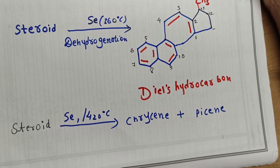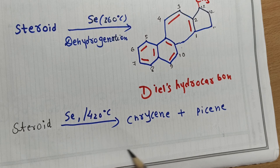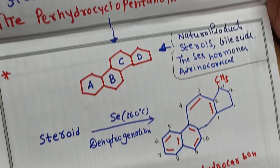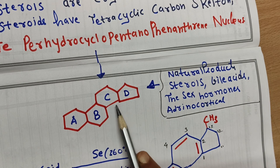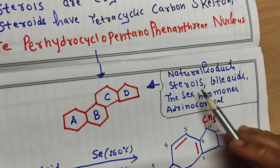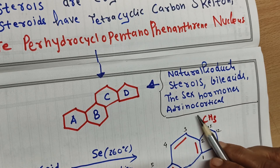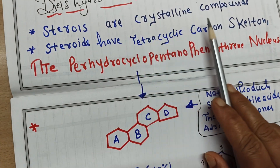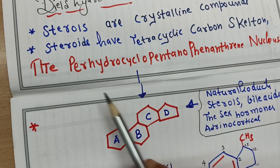At 360°C we get Diels' hydrocarbon, but if the temperature is raised to 420°C, steroids undergo dehydrogenation to form chrysene and pyrene in small amounts. Generally, steroids have four rings in their structure — A, B, C, and D — present in most natural products like sterols, bile acids, sex hormones, and adrenocortical hormones.